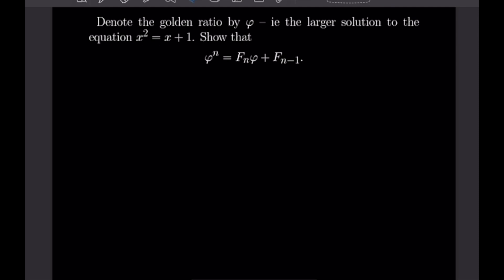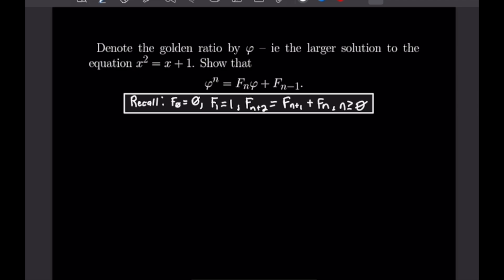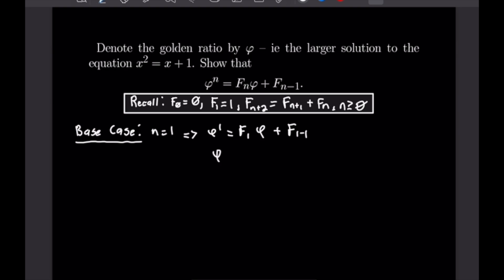As always, we want to start with a base case. Our base case is when n = 1. Substituting into our equation, we get φ¹ = F₁·φ + F₀. Since F₁ = 1 and F₀ = 0, this gives φ = φ. That confirms our base case.